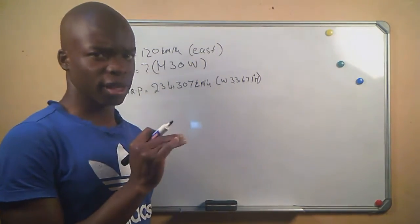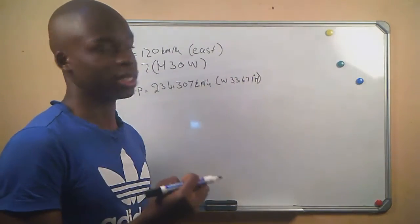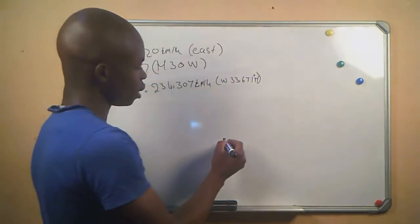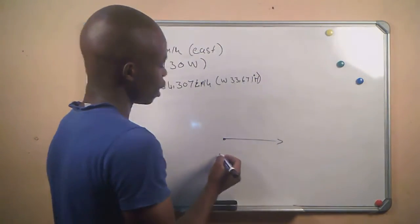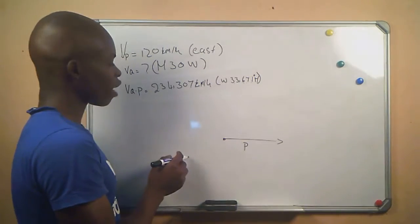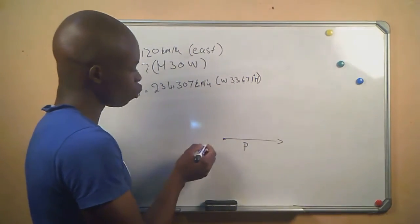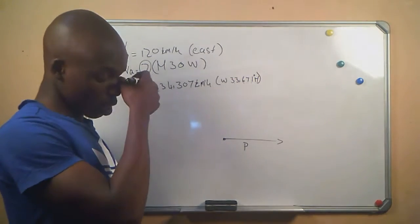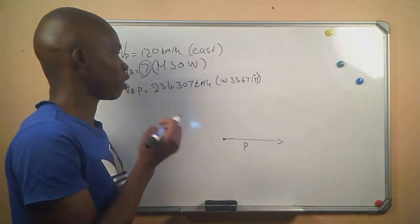So this is the information that we are given in this question. They gave us everything. The trick in this question is to get the structure right. They gave us a velocity P and they say it is to the west at 120. This is P. And then they also gave us velocity Q. They didn't give us the magnitude of velocity P, but they gave us its direction.